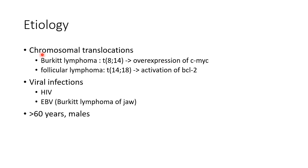Non-Hodgkin lymphoma can be due to chromosomal translocations. For example, Burkitt lymphoma is due to translocation involving chromosome 8 and 14, which leads to overexpression of CMYC. Follicular lymphoma is due to translocation involving chromosomes 14 and 18, which leads to activation of BCL2.